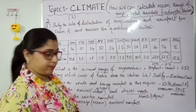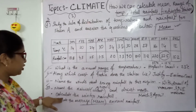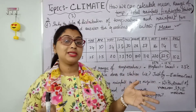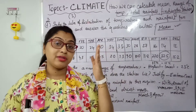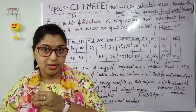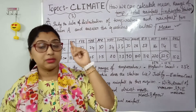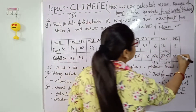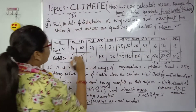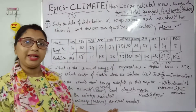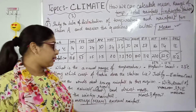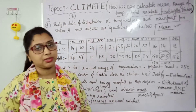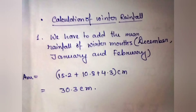The second question that was skipped: calculate the winter rainfall. You need to know the seasons and which months they comprise. Winter basically comprises December, January, and February. So you have to add the rainfall figures for December, January, and February and write the answer in centimeters.